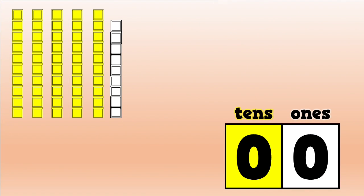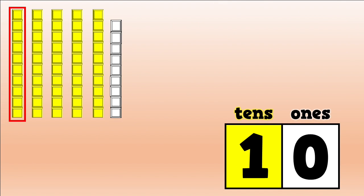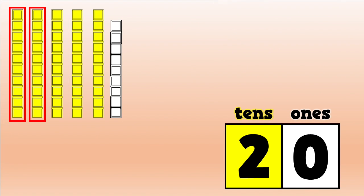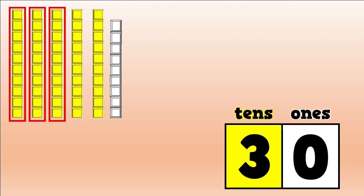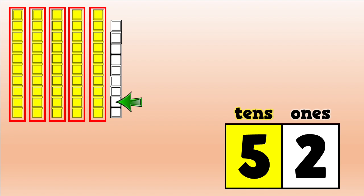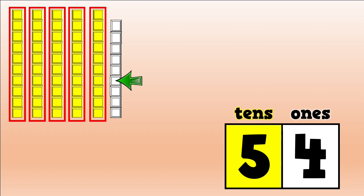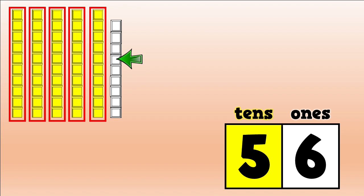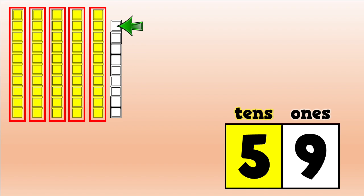Skip count and count on to check: ten, twenty, thirty, forty, fifty, fifty-one, fifty-two, fifty-three, fifty-four, fifty-five, fifty-six, fifty-seven, fifty-eight, fifty-nine. You got it!